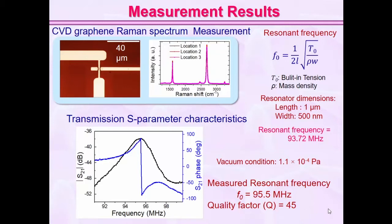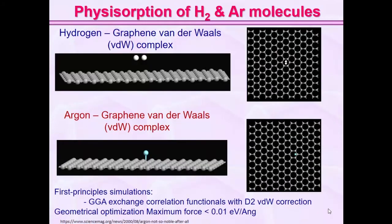Before going on to the gas sensing measurement, we wanted to understand how these gas molecules are absorbed onto graphene, because if the molecules are not binding to the graphene, then it's difficult to sense them. We did DFT calculations: we placed hydrogen molecules slightly apart from the graphene and optimized the structures. In the final optimized structure, the hydrogen molecule sits inside a ring of the graphene lattice. It appears to physisorb onto the graphene.